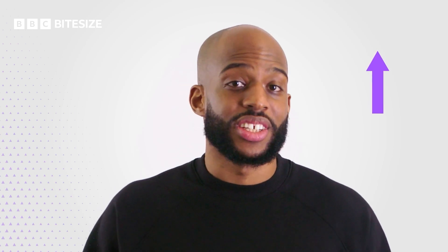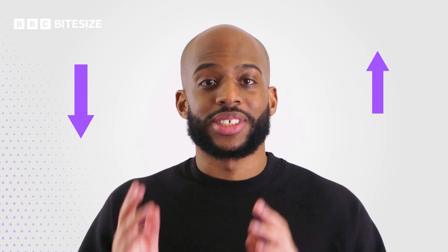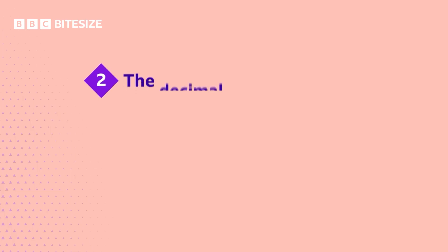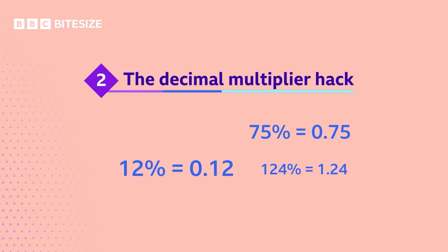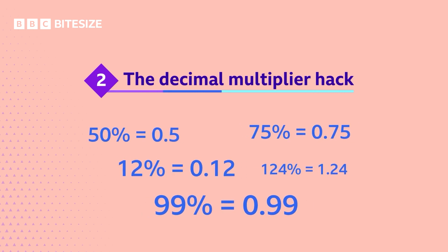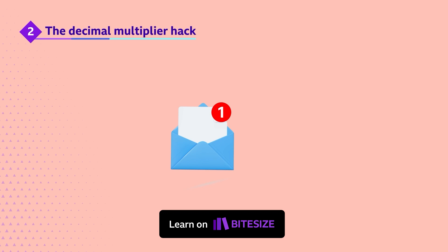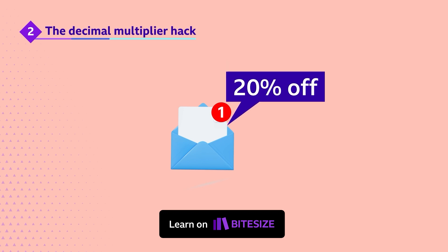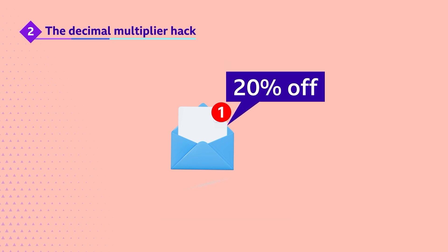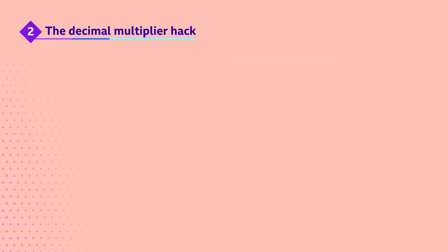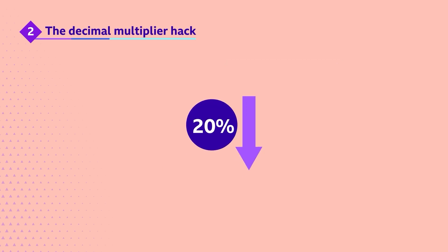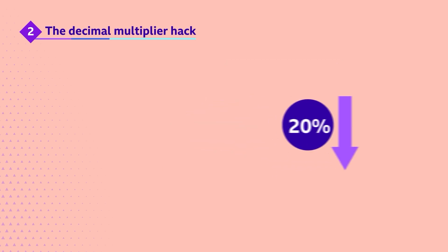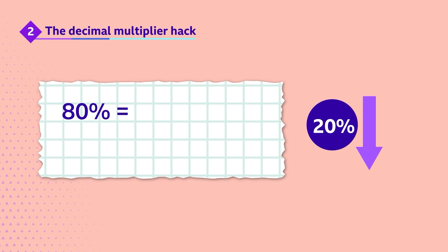Here's another hack that's very useful when increasing or decreasing a value by a percentage. It's called the decimal multiplier hack. Every percentage has an equivalent decimal value. If your favourite shop sends you an email offering you a 20% discount, you can use this hack to work out the new price of an item you want. To decrease something by 20%, you multiply by the decimal equivalent of 80%, because 80% is 20% less than the original amount, 100%.